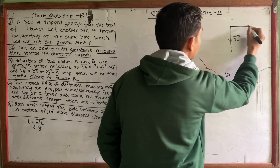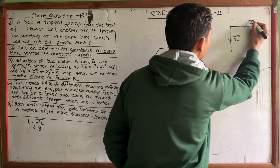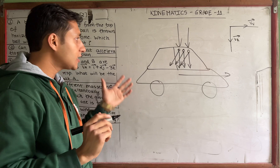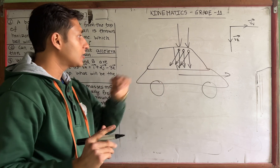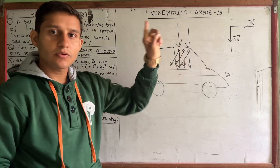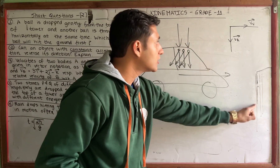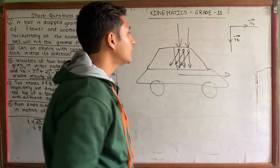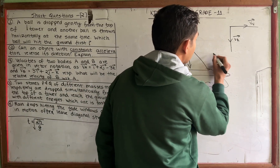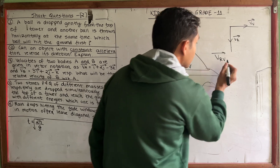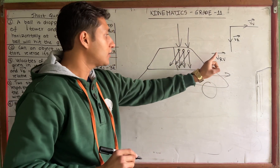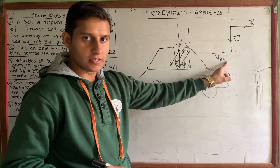I will write the velocity of the vehicle as V_V and the velocity of rain as V_R. We need to find the velocity of rain with respect to the vehicle, which is V_RV — rain with respect to vehicle.